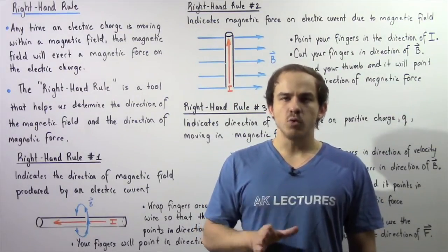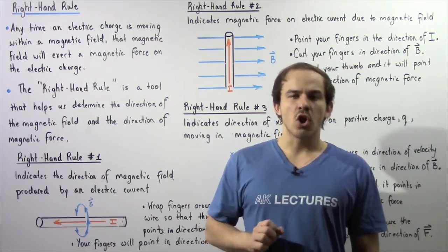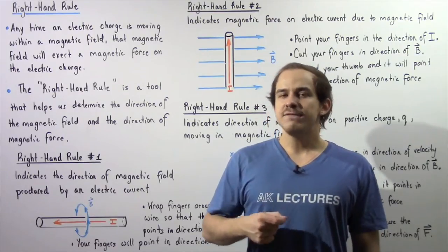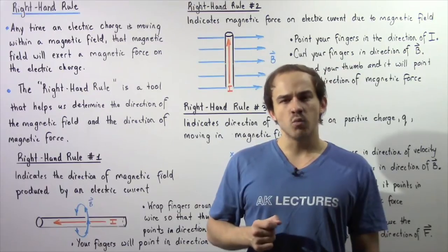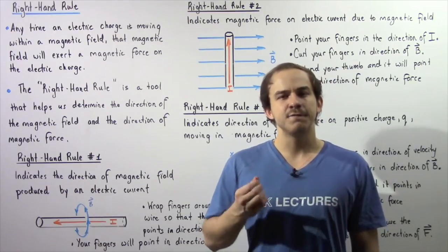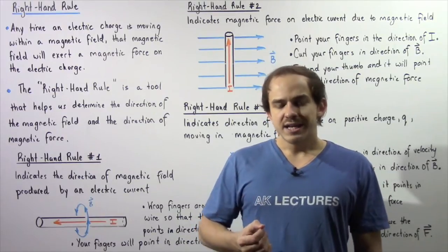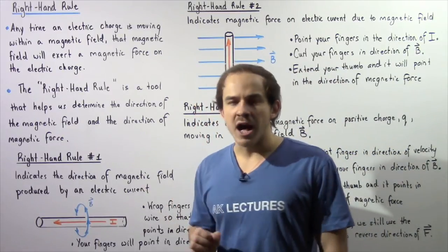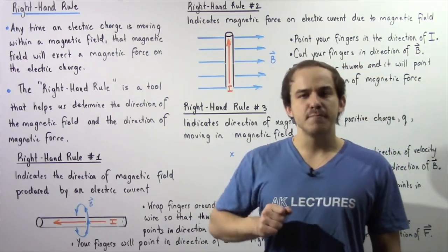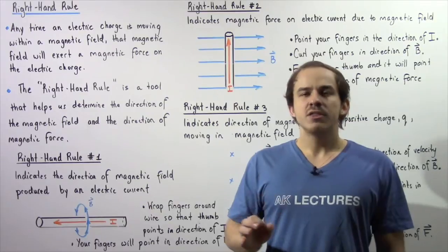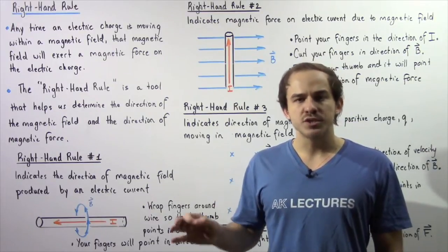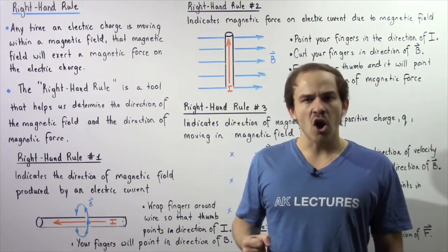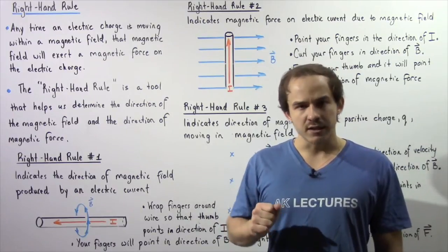Anytime we have an electric charge that is moving through a magnetic field, that electric charge will feel a magnetic force as a result of that magnetic field. At the same time, if an electric current is moving through a conducting wire, that electric current will create a magnetic field around that wire. Since magnetic force and magnetic field are vectors, they have direction as well as magnitude. So how do we determine the direction of the magnetic field produced by our electric current, and how do we determine the magnetic force that acts on a moving electric charge within a magnetic field?